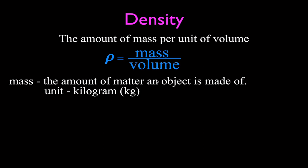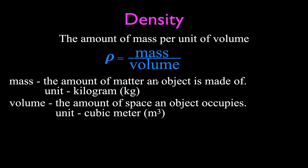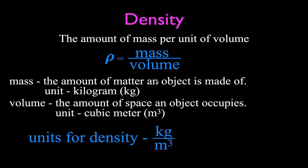Mass is the amount of matter that an object is made of, and the official SI unit for mass is the kilogram — not the gram, the kilogram. Volume is the amount of space that an object occupies, and since it's measured in meters, the unit for volume is meters cubed. Therefore, the official units for density are kilograms per meter cubed. In practice, we often express density as grams per cubic centimeter, or grams per milliliter, since one cubic centimeter equals one milliliter.